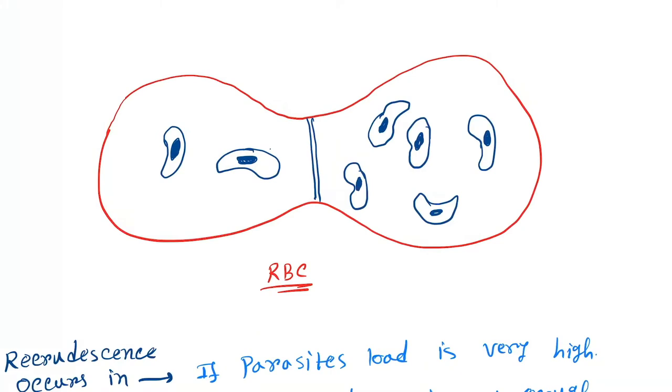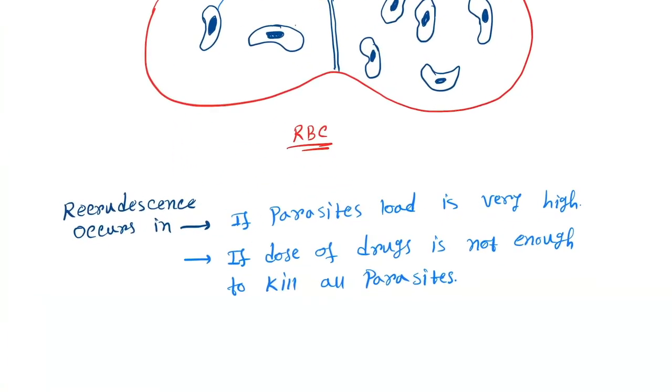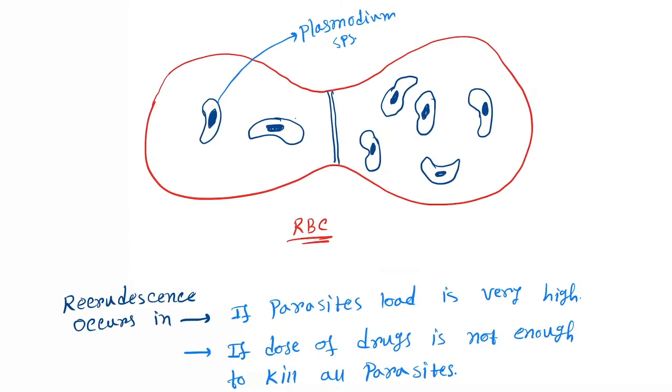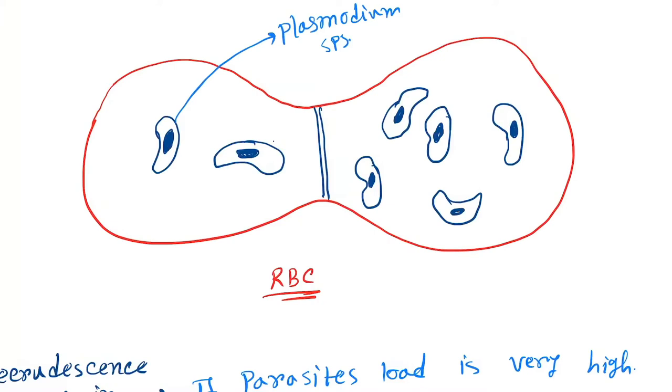Now, what is recrudescence? Recrudescence occurs in RBCs with plasmodium species. Sometimes the parasite load is very high, and after chloroquine therapy, some plasmodium species will remain there.